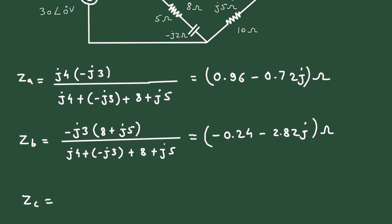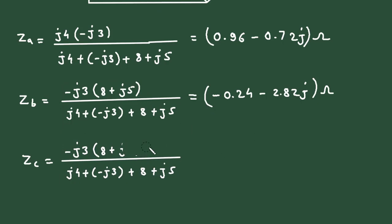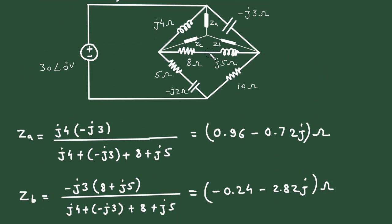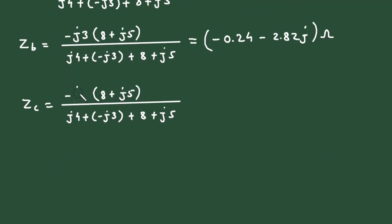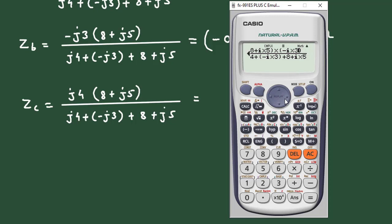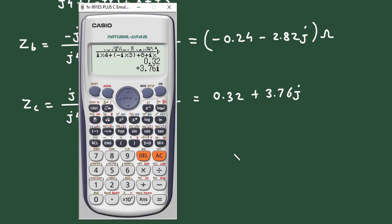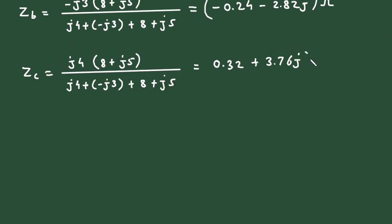Now the same for ZC. Again, only we have to change the numerator part. The numerator for ZC will be J4 times (8 plus J5), so just change this to J4. It equals 0.32 plus 3.76j. Again its impedance, so its unit will be ohms.